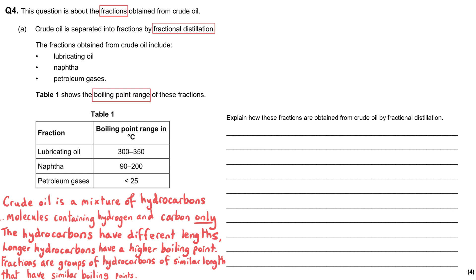And we can tell it's not totally pure because the boiling points have got a range. And so we are asked to explain how these fractions are obtained from crude oil by fractional distillation. There are four marks for this question, so we need to make sure we give a well-developed answer that refers to the fractions and the data in the table.